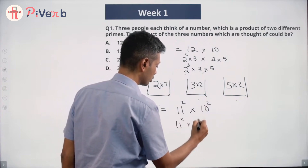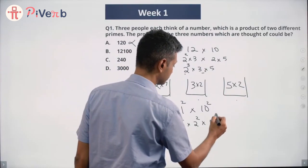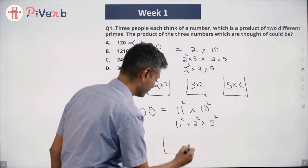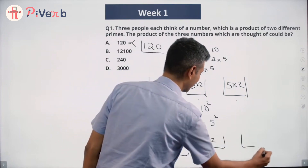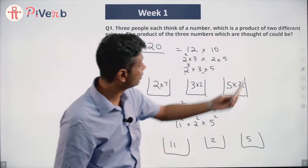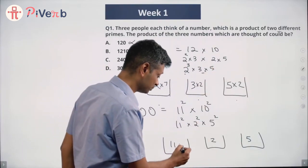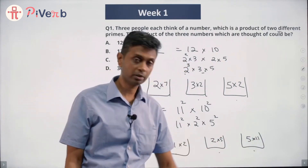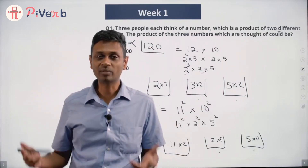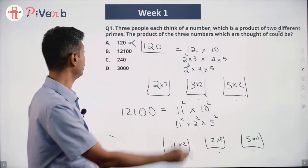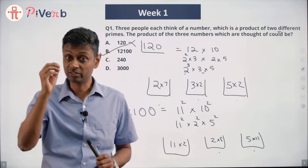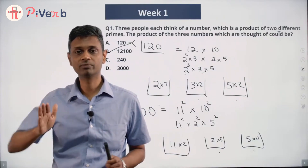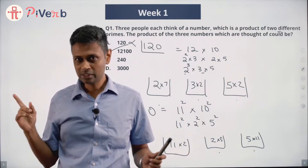Now let's try 12100. It's 121 × 100 = 11² × 10² = 11² × 2² × 5². The powers are 2 + 2 + 2 = 6 — this seems to work! But can I actually assign them? I can't give one person 11², another 2², another 5² — those aren't products of different primes. Instead: first person gets 11 × 2, second gets 2 × 5, third gets 5 × 11 — two different primes each. Brilliant, 12100 works!